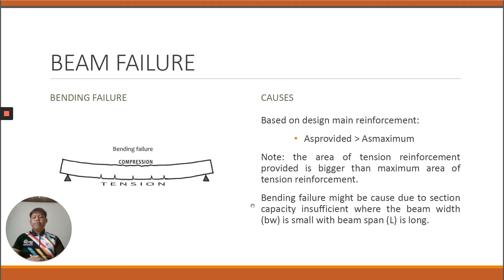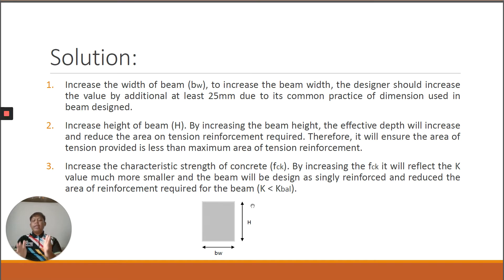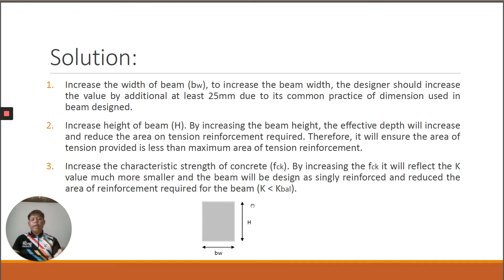To avoid this type of failure during calculation, no redesign is necessary. My first suggestion: increase the width of the beam BW at the initial stage when determining the initial beam dimension. For example, if the initial BW is 125 mm, we may increase it by 25 mm increments following common practice — from 125 mm to 150 mm, 175 mm, 200 mm, and so on. By increasing BW, we can increase the maximum area of reinforcement.